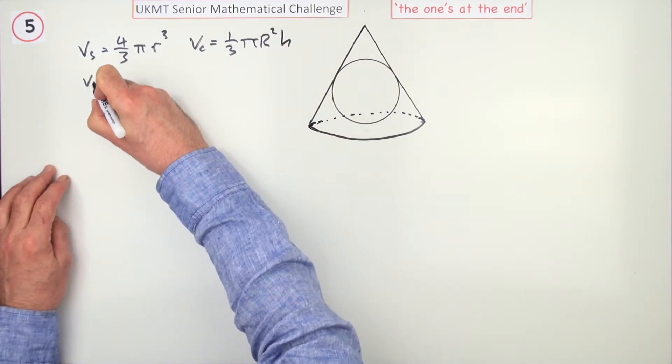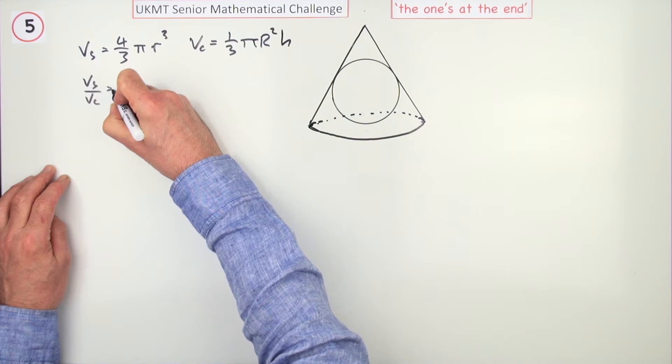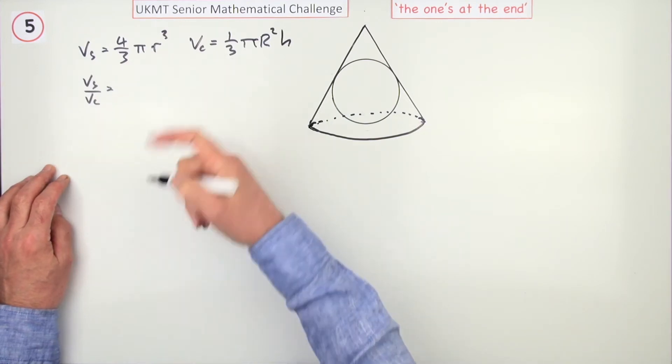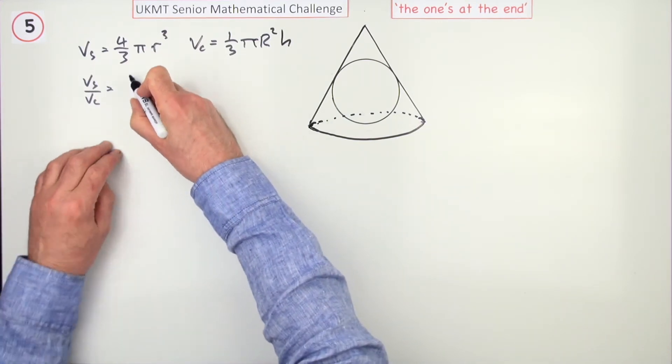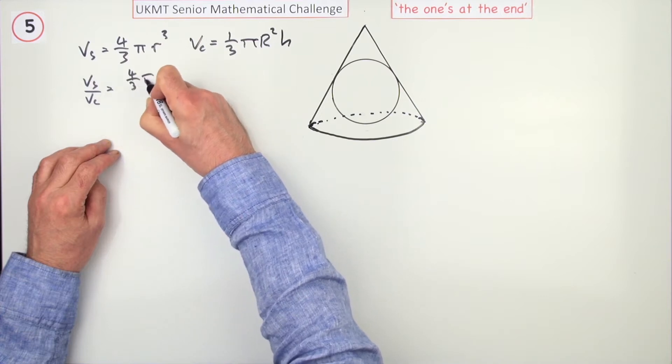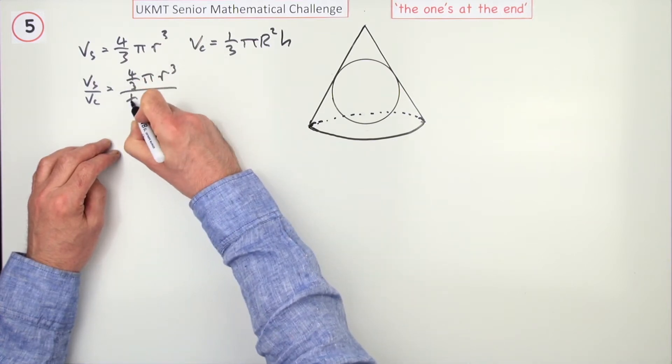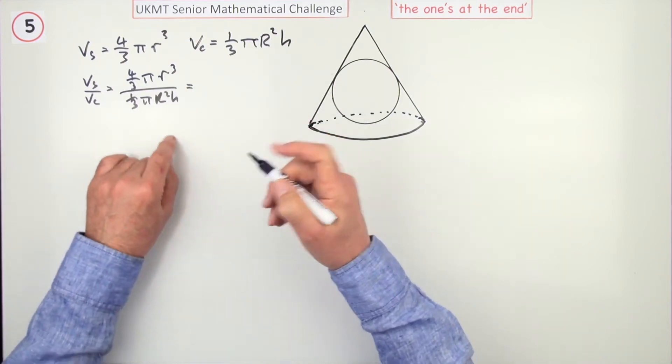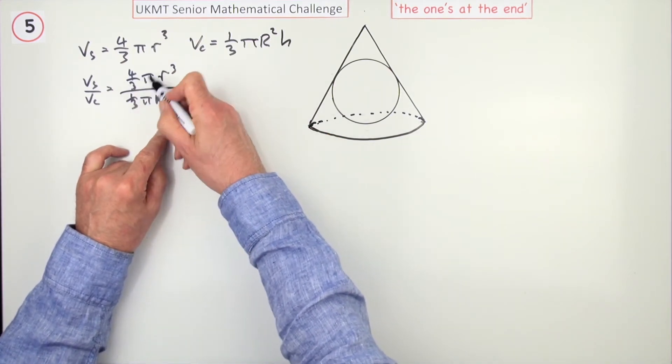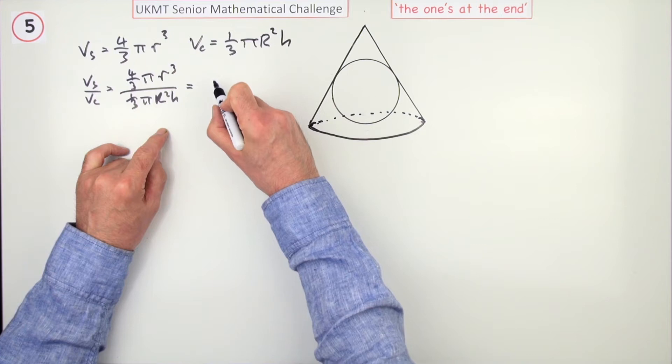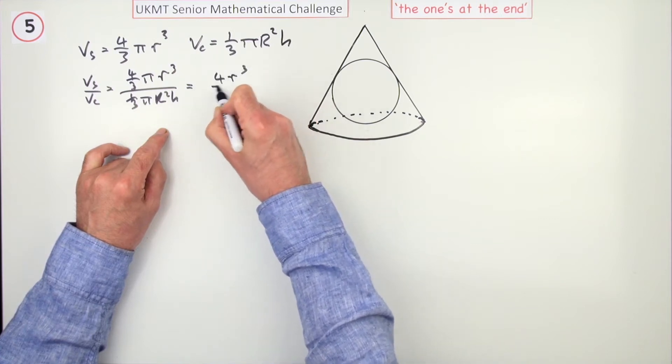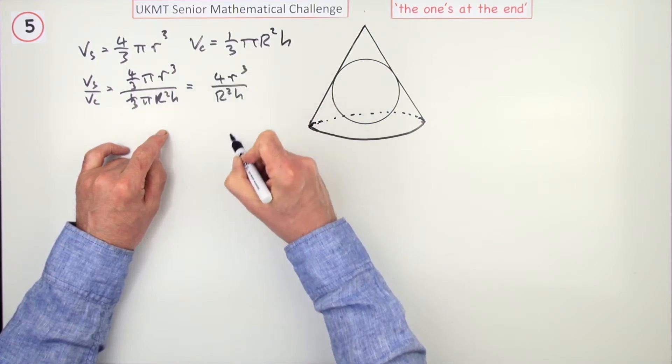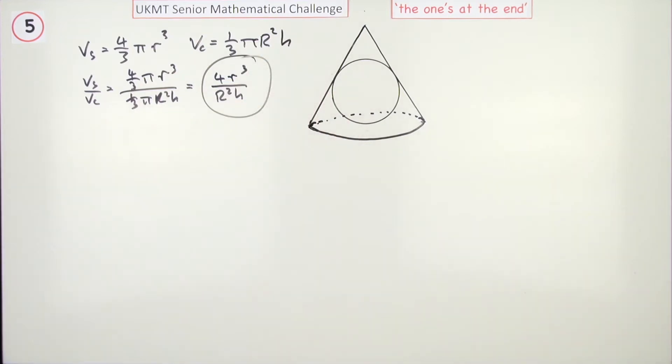So just simplifying this bit to begin with, the ratio of the volumes would be dividing these. 4π over 1/3 π - of course it's a total waste of time writing that down, all these bits cancel out. π cancels, third cancels, I'm left with 4r³ over R²h. That's what I want to simplify, or rather express in terms of the angle here.